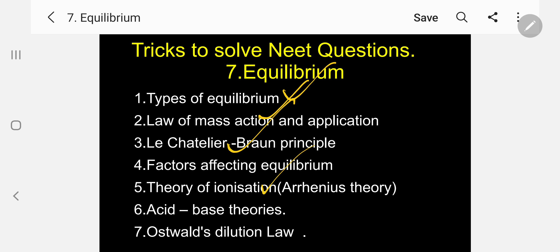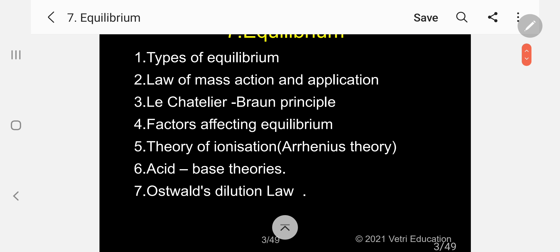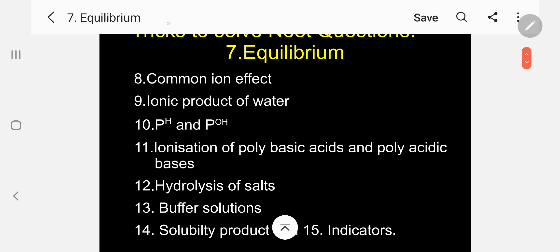Next, theory of ionization, specifically Arrhenius Theory. Then acid-base theories — there are three: Arrhenius Theory, Lowry and Bronsted Theory, and Lewis Theory, which is the modern theory. Next, Ostwald Dilution Law. Then, most importantly, Common Ion Effect. Then Ionic Product of Water. pH and pOH — how to determine the problem-solving method, you must study. Also, ionization of polybasic acids and polyacidic bases.